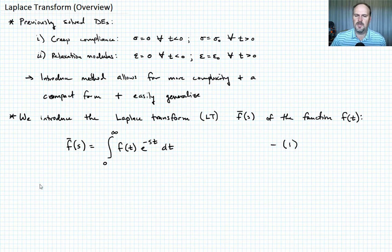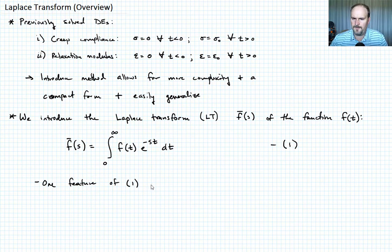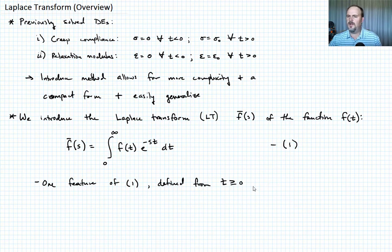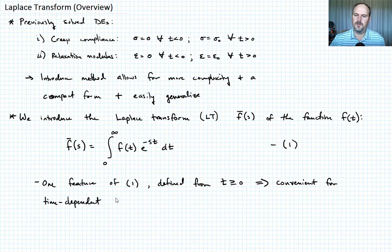One notable feature of equation one is that it's defined only for T greater than or equal to zero. That's going to be convenient for time-dependent problems — like the kind we're solving — where time starts at zero and goes from there.